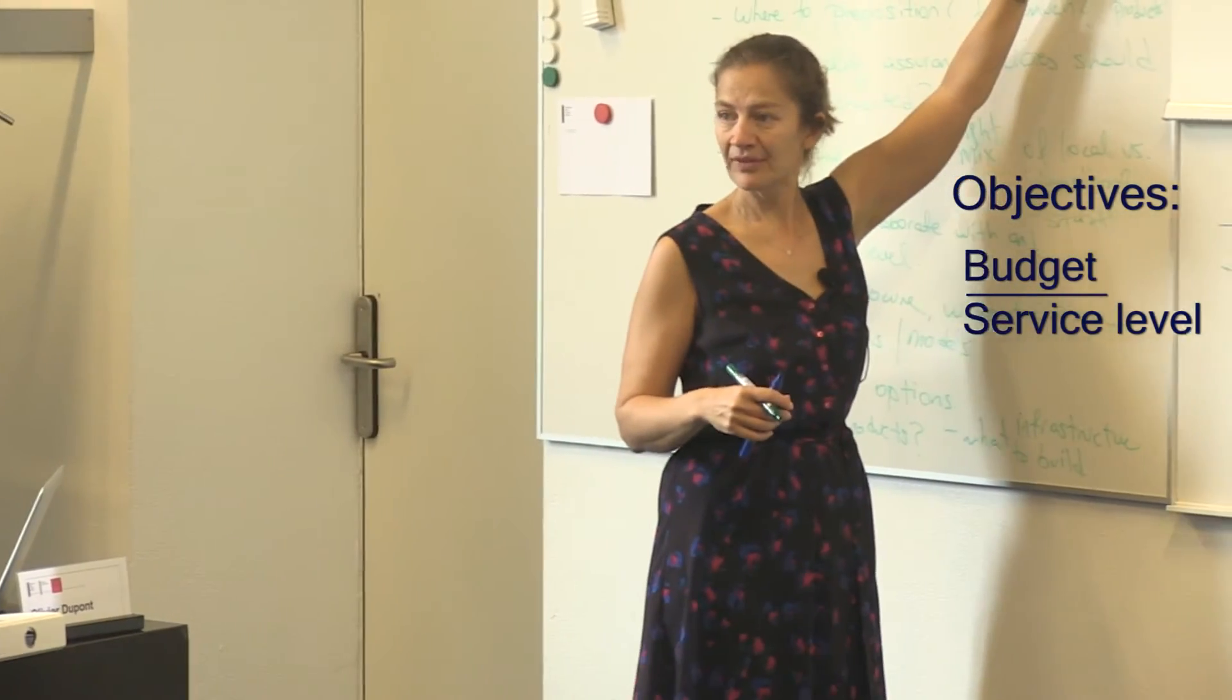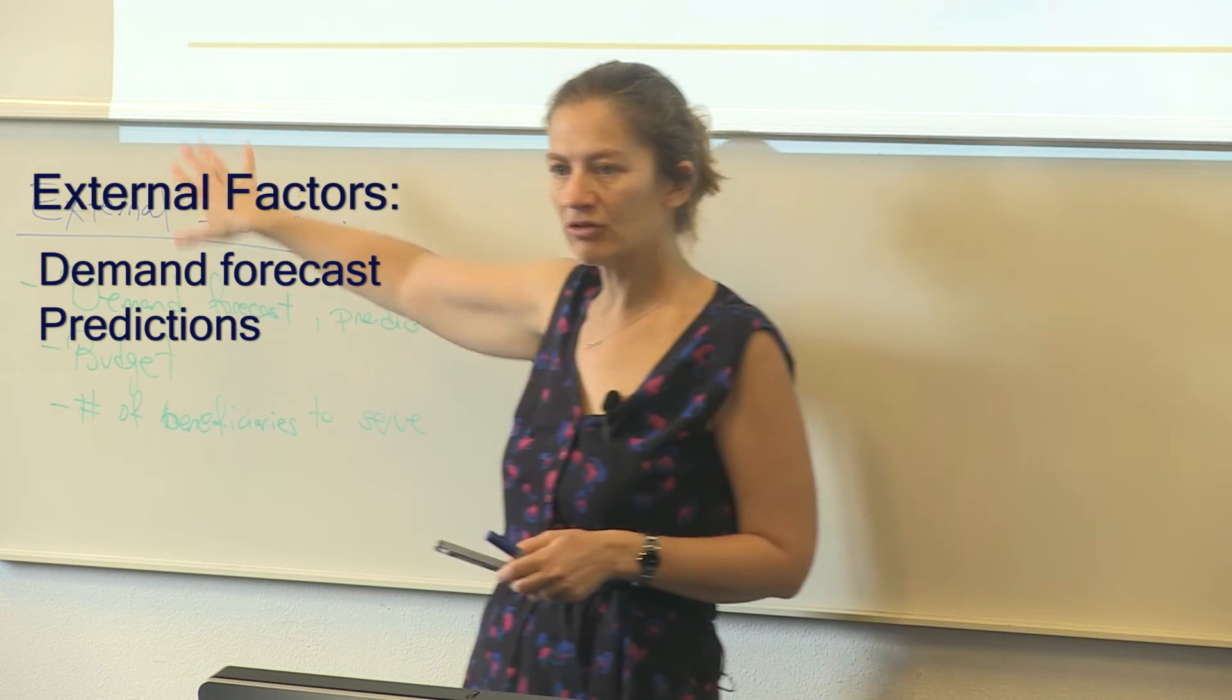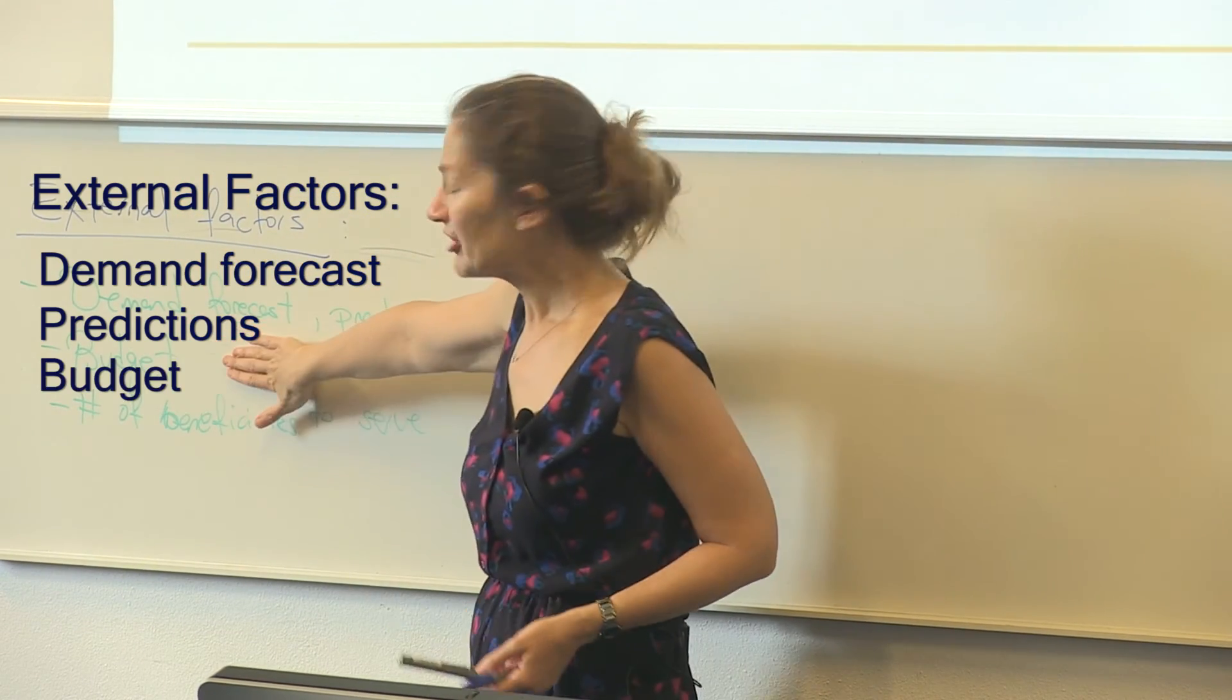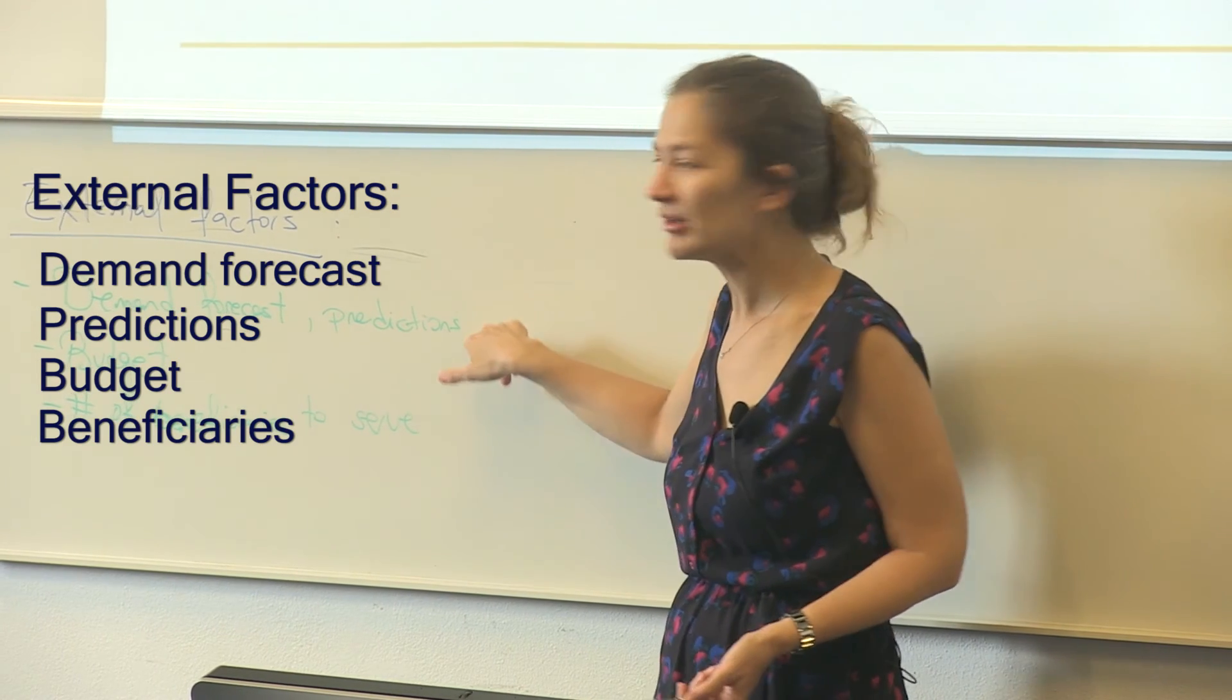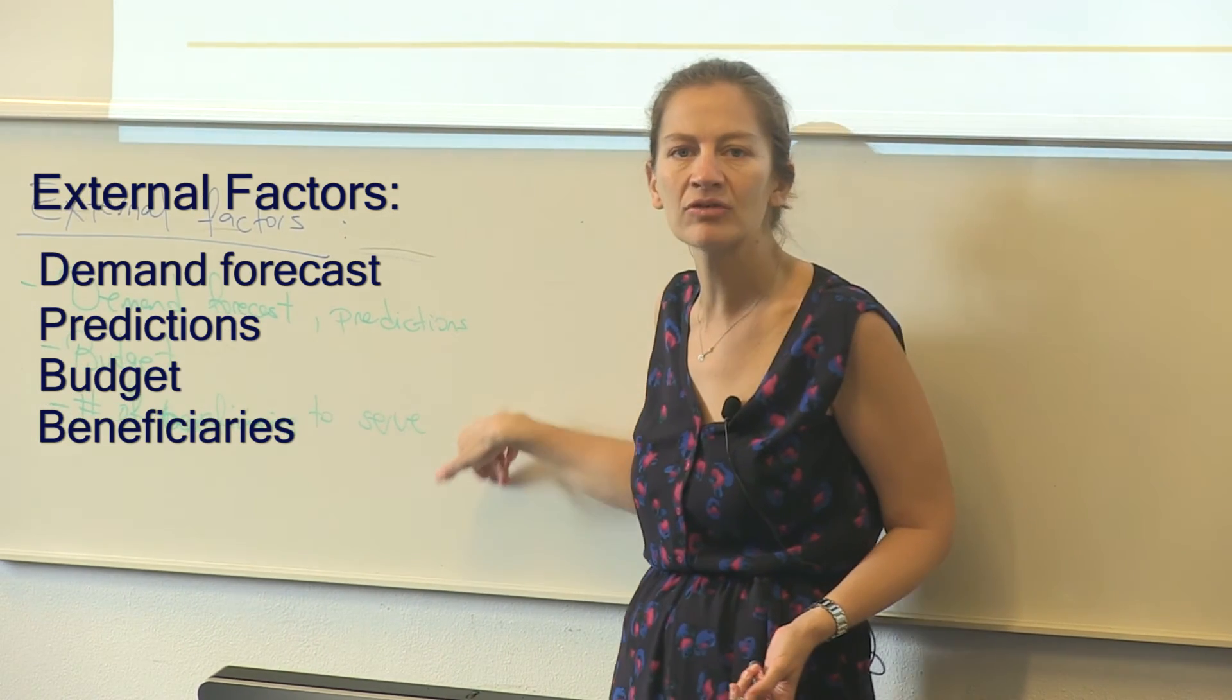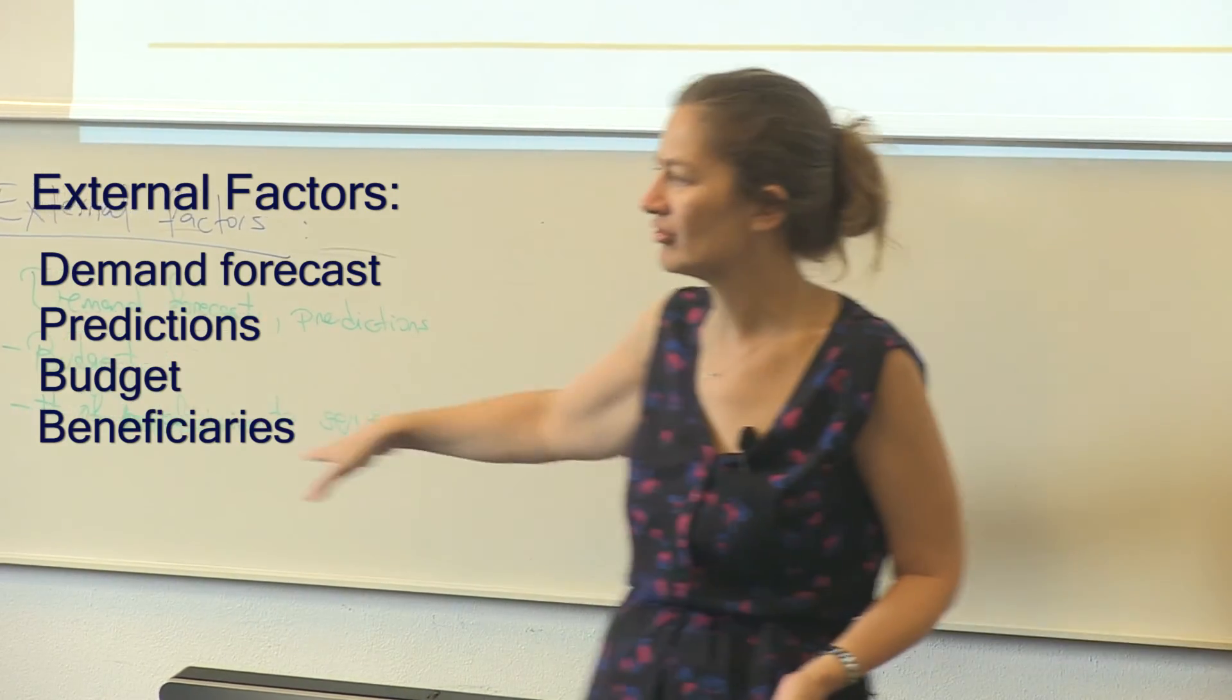So how about some other external factors? We talked about forecast. Here I'm going to say demand forecast predictions that might go into your models, the budget levels that you might have, so the number of beneficiaries to serve. That's similar to the demand forecast or the demand estimation. What other external factors go into decision models?